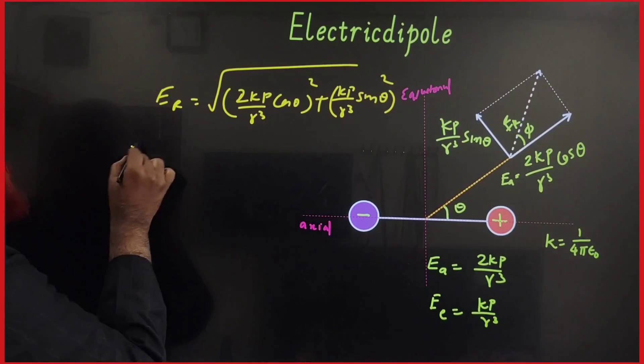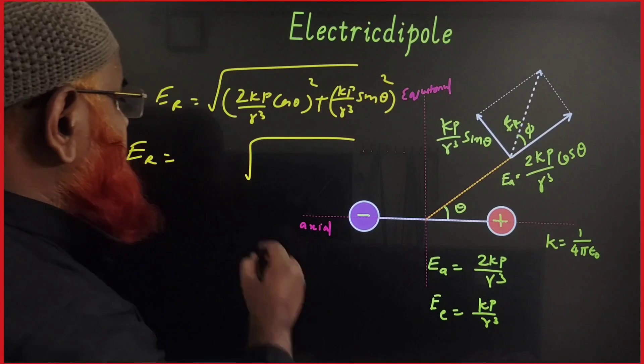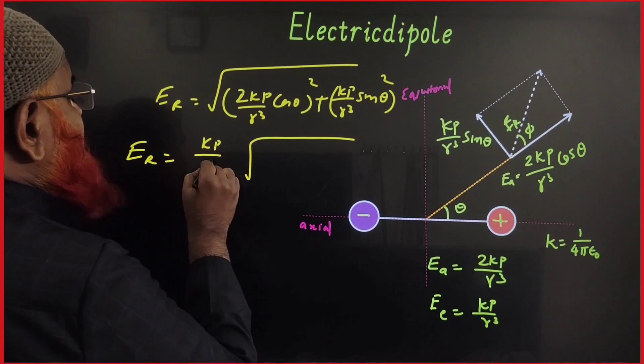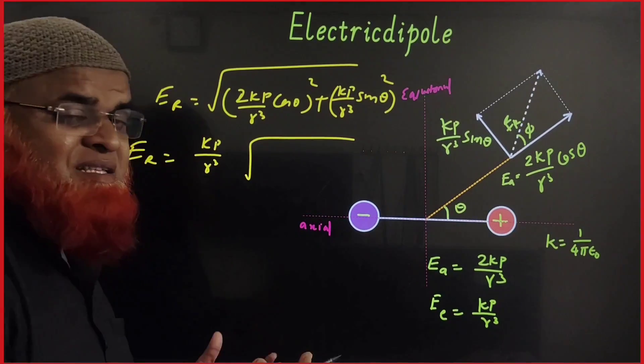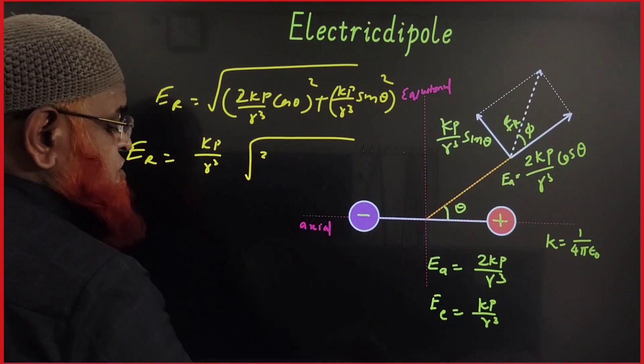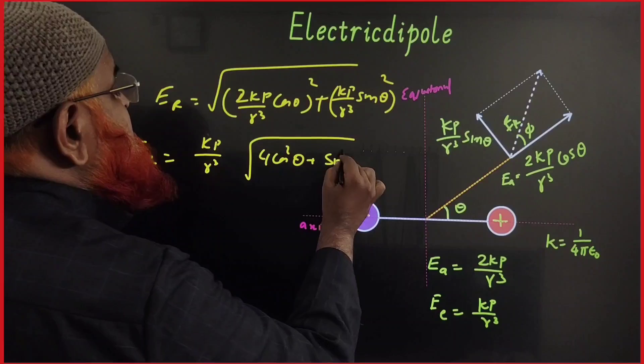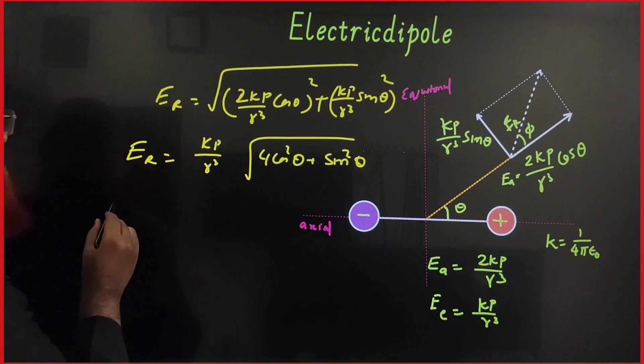Okay. So then what are the things which are going to be common here? Kp by r cube you can take common out here. Kp by r cube if you take common out. What is left inside the root then? It is 2 square means it is going to be 4 cos square theta plus sin square theta. Okay. So what I am going to do here?